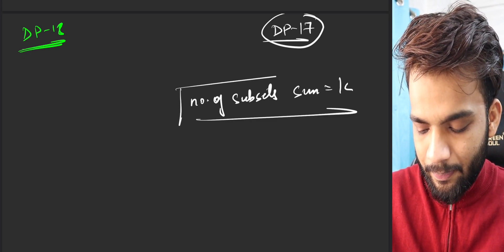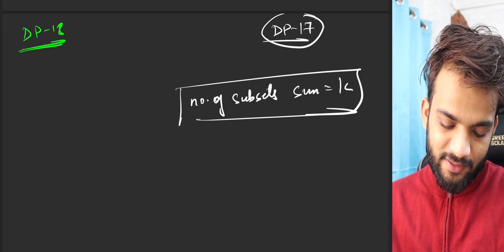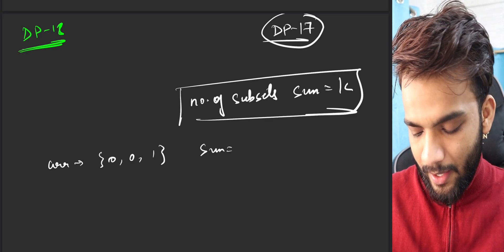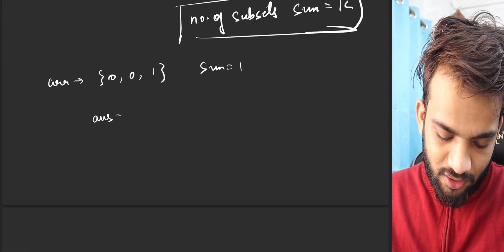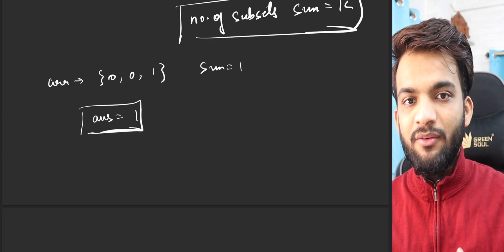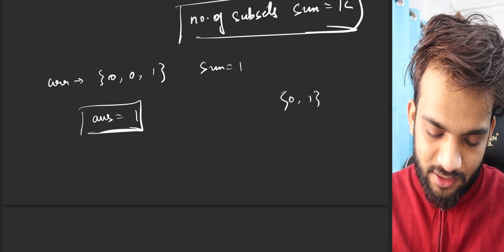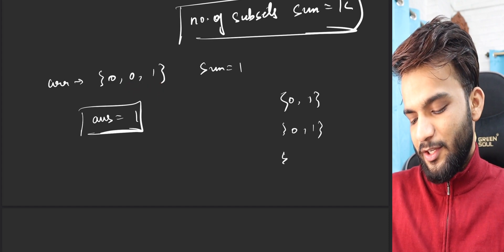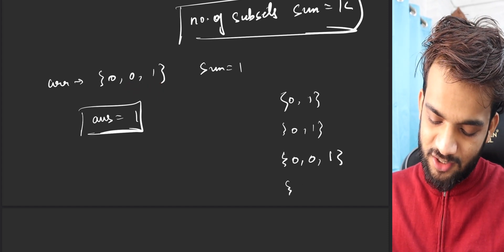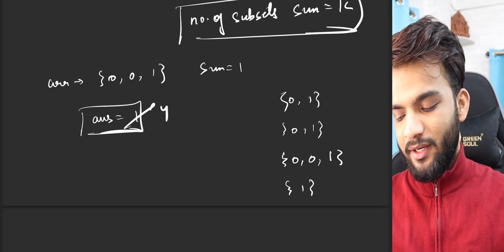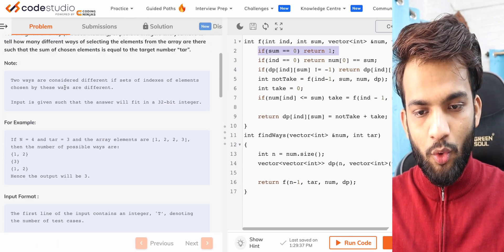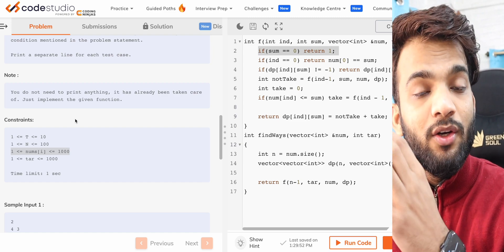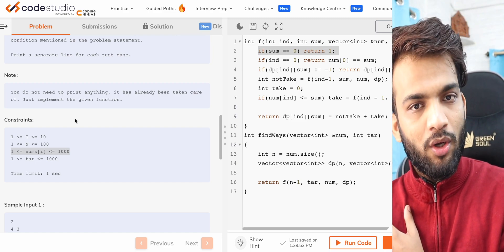In that video, a lot of people were saying: what if the array is given as [0, 0, 1] and the sum is 1? Your code will give you the answer as one subset. Ideally it should have been four subsets. The previous code passed because in the test cases it's clearly written the numbers will be greater than or equal to 1 — there will be no zeros.